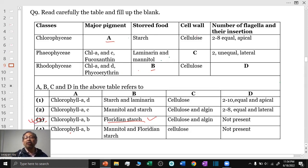The cell wall is made of cellulose and algin. This is the source of algin. So, Phaeophyceae contains algin in their cell wall and D is the number of flagella and their insertion. Here, in Rhodophyceae, there is no flagella. So, answer is option number 3.